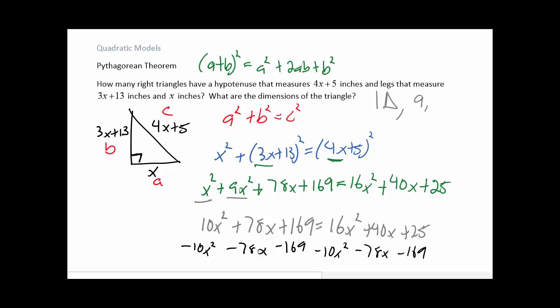And the dimensions are 9 as one of our numbers. We've got x equals 9. Here we get 3 times 9 plus 13. So 3 times 9 plus 13 is 40. So the dimensions are 9, a 40, and the last one is 4 times 9 plus 5. So 4 times 9 plus 5 gives me a 41. Okay. So how many triangles are there that satisfy that? One. And it's the one that has the dimensions of 9, 40, and 41.